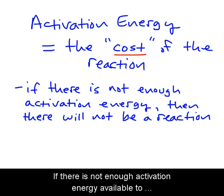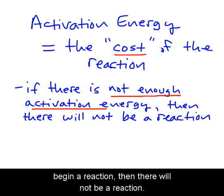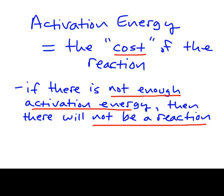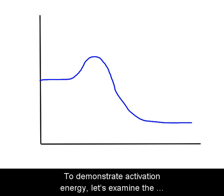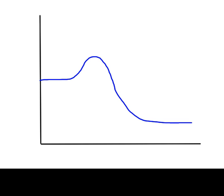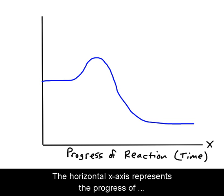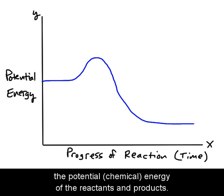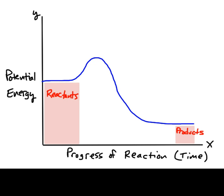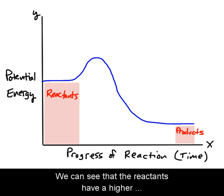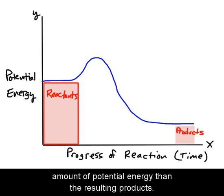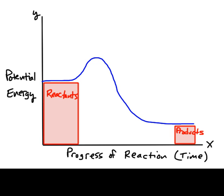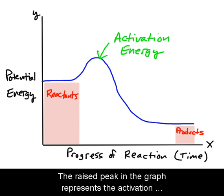If there is not enough activation energy available to begin a reaction, then there will not be a reaction. To demonstrate activation energy, let's examine the following graph. The horizontal x-axis represents the progress of the reaction over time, while the vertical y-axis represents the potential chemical energy of the reactants and products. We can see that the reactants have a higher amount of potential energy than the resulting products.